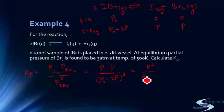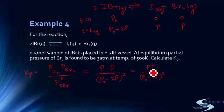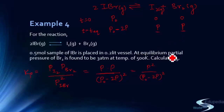This method is much simpler than the mole-fraction approach used in the previous example. We just need the values of P and P0 to get Kp directly. Since the partial pressure of bromine at equilibrium is given as 3 atm, P = 3 atm.